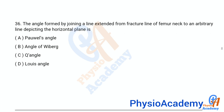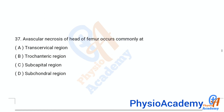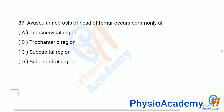Question number 36: The angle formed by joining a line extended from the fracture line of the femur neck to an arbitrary line depicting the horizontal plane is called: option A Pauwel's angle, option B lower end of tibia plus talus. The correct answer is option A, Pauwel's angle.